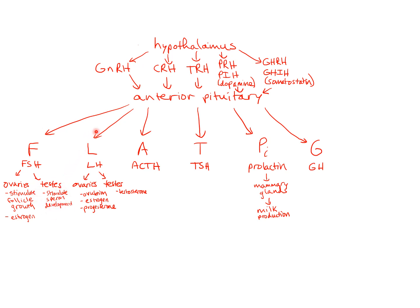GnRH also tells the anterior pituitary to release LH. In women, LH goes to the ovaries, and there will be an LH surge in the middle of the menstrual cycle that causes ovulation — the release of the egg. LH also stimulates the ovaries to produce estrogen and progesterone. In men, LH goes to the testes and stimulates them to produce testosterone.